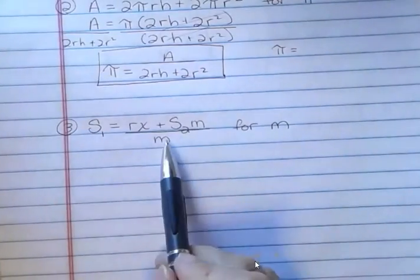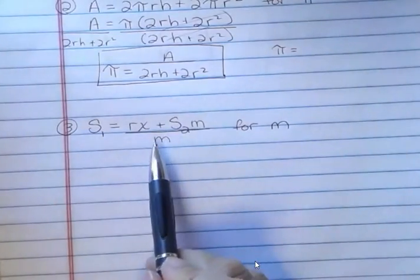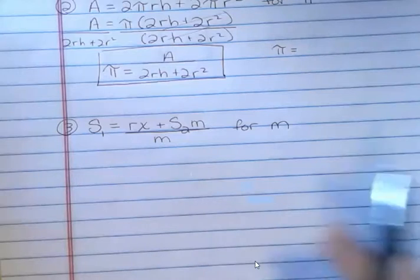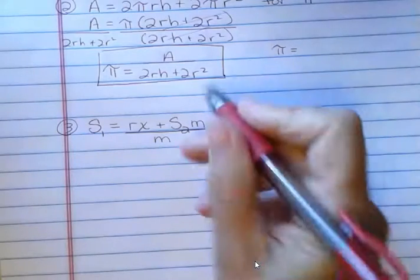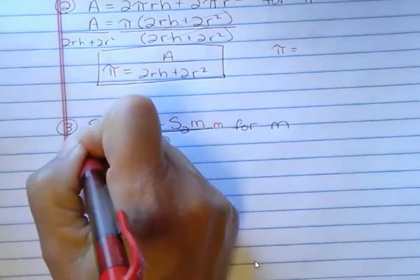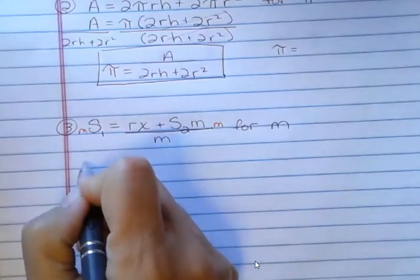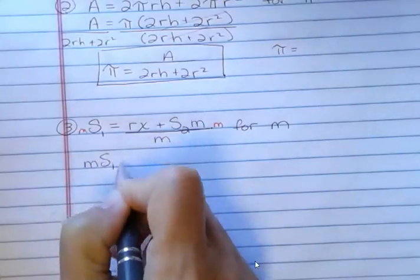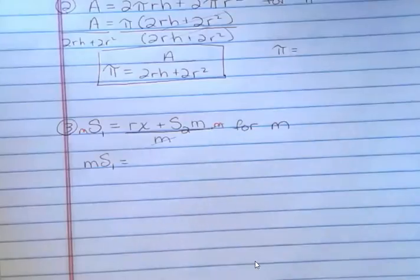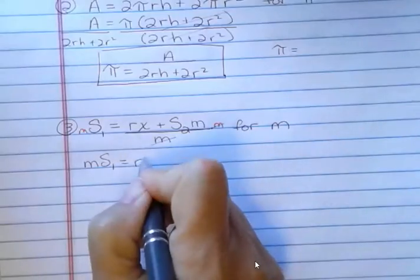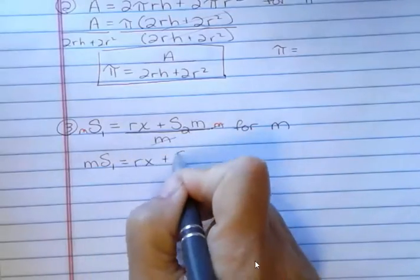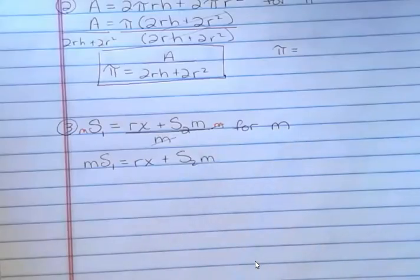I want to get m out of the denominator because I want to solve for that. So I'm going to multiply both sides by m. And that's going to give me m s sub 1. Over here, these m's are going to cancel. And I'm going to get rx plus s sub 2m or m s sub 2.